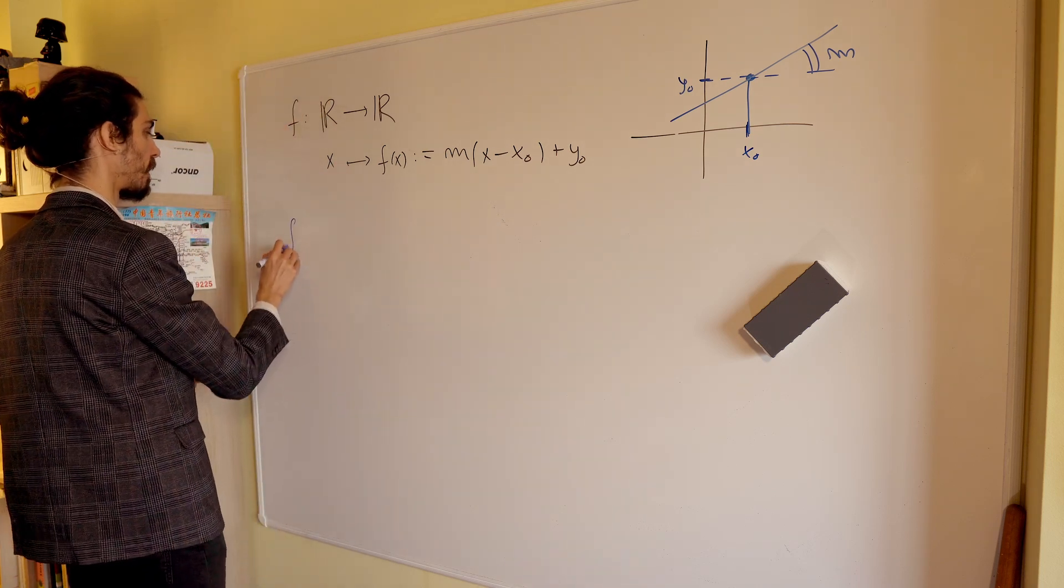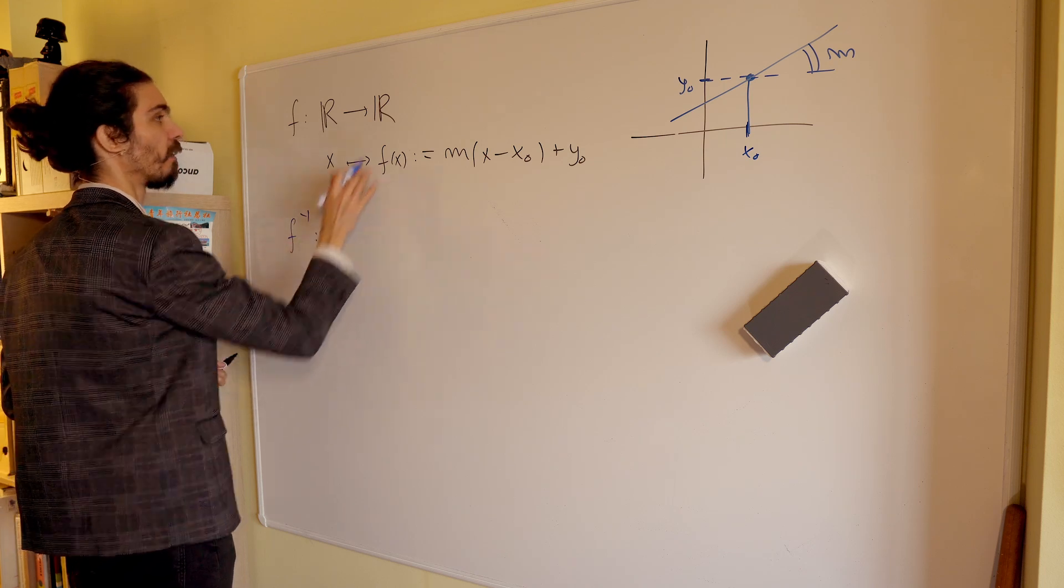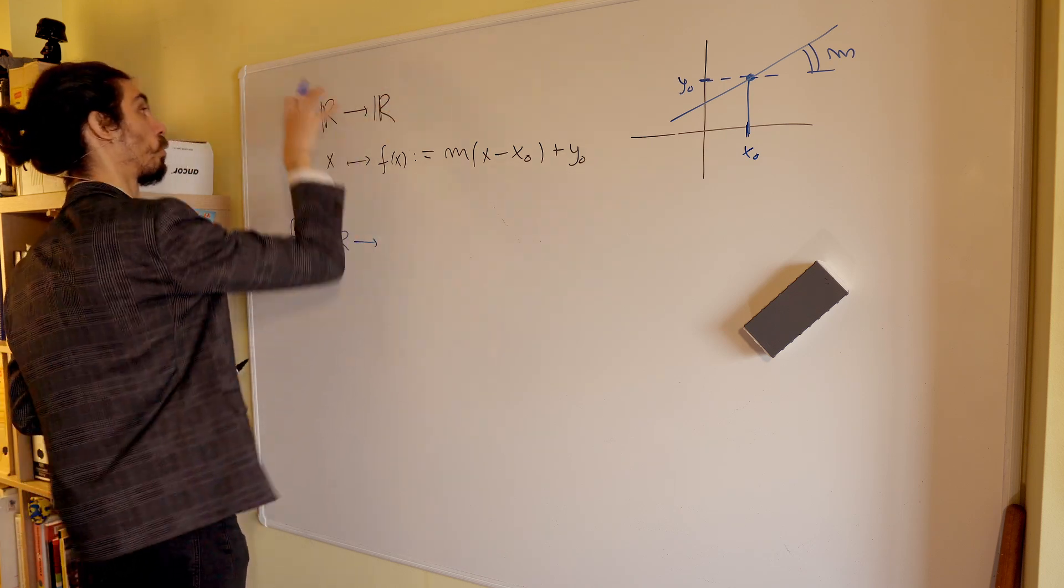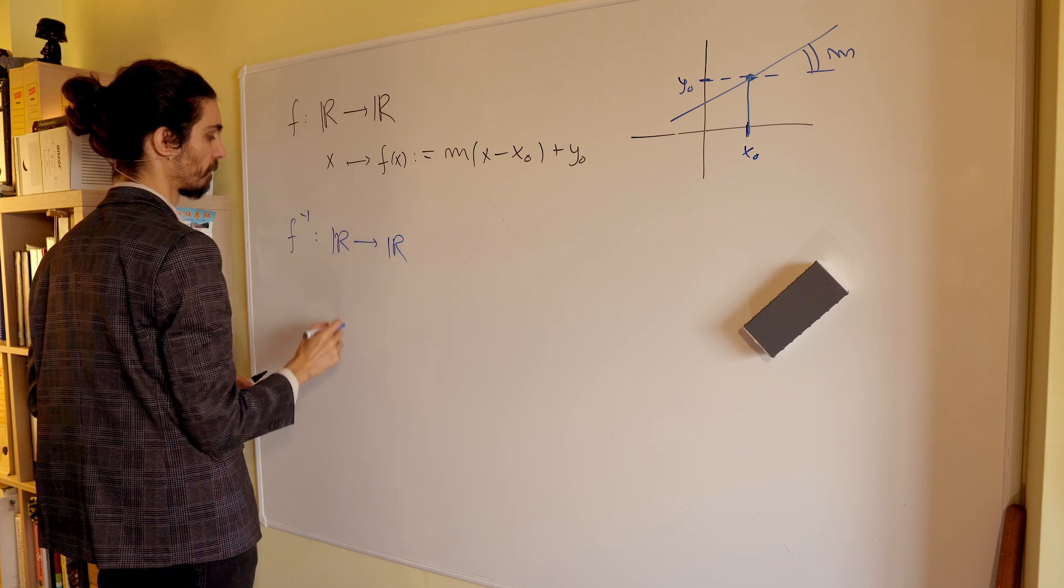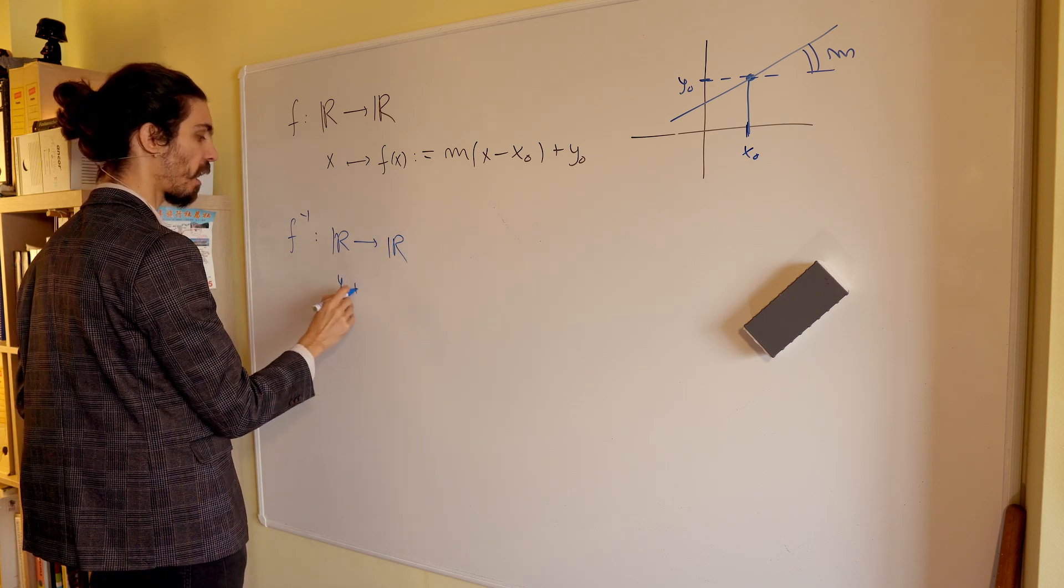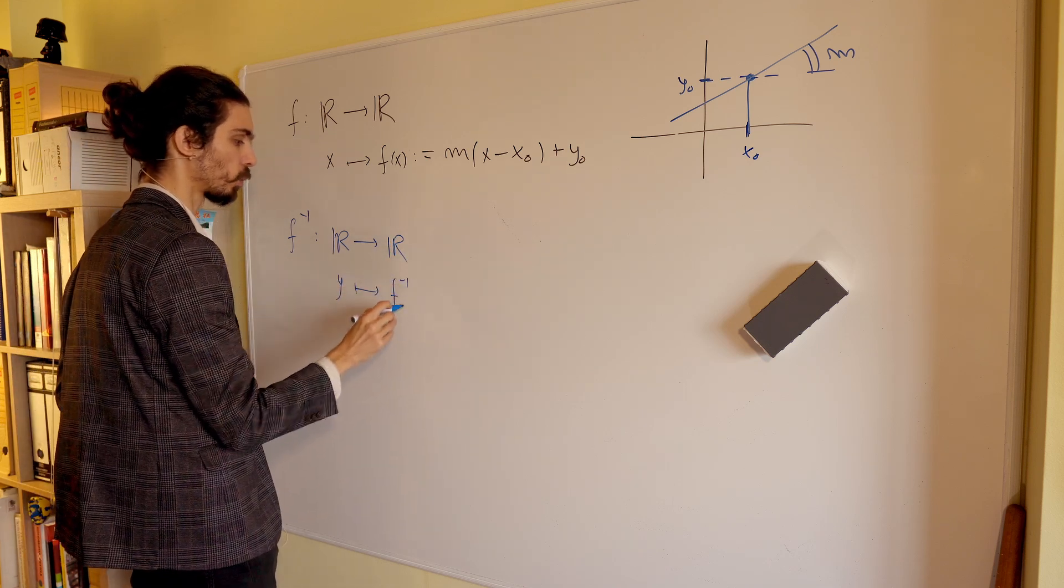As a result, let me define it. f minus 1 will map R into R, and every y leaving in R is now mapped into f minus 1 of y.